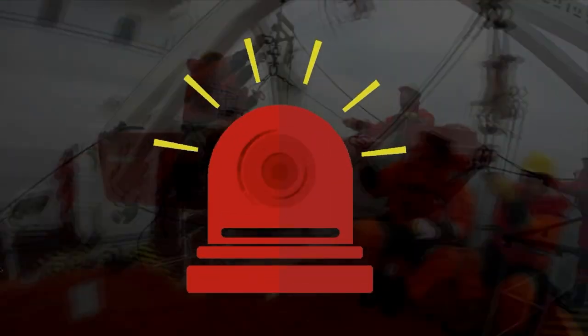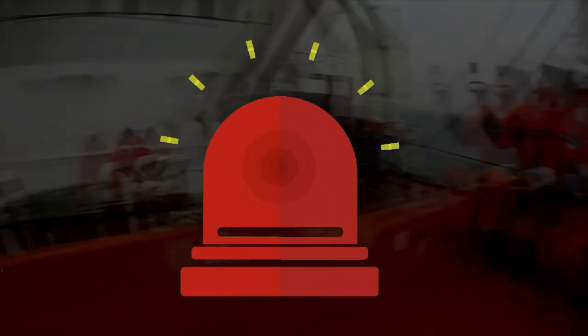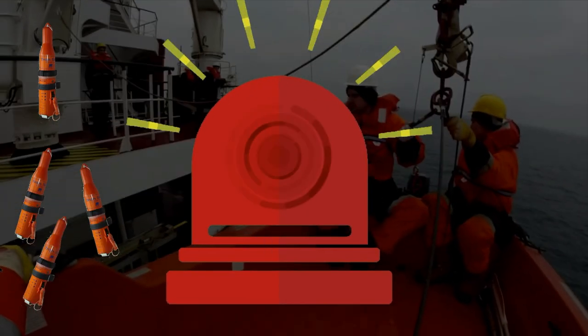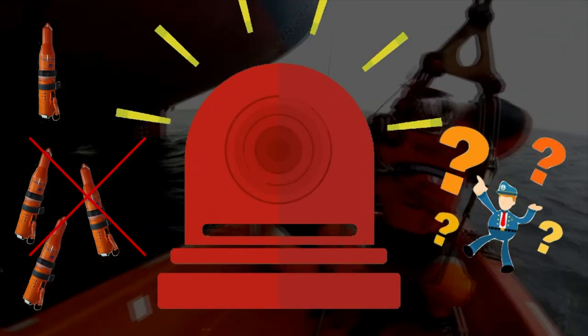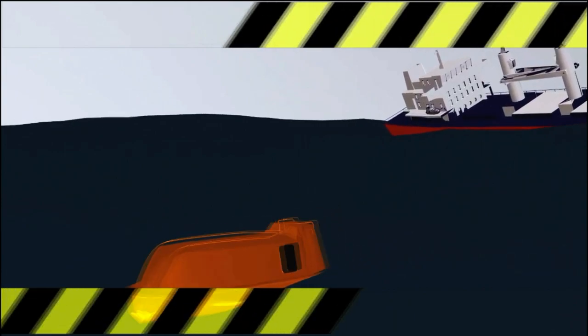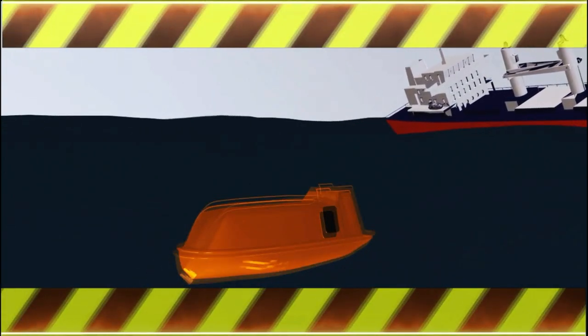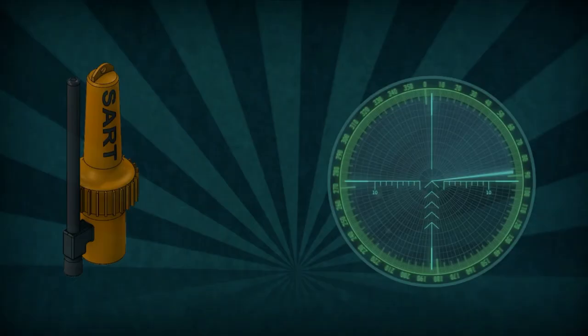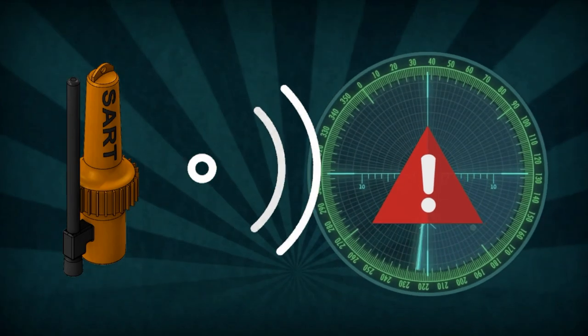When there is an emergency on the ship it is important to only use one search and rescue transponder as multiple activated SARTs confuse rescuing ship or coastguards. When the ship's crew has abandoned the ship in the lifeboat or survival craft it should be first maneuvered away from the ship before activating it so that the ship does not block the receiving or transmitting signal.